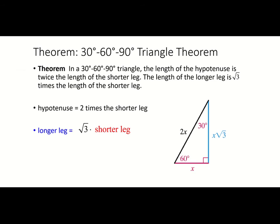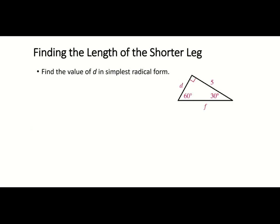Our second special triangle is the 30-60-90 triangle. This one is a little harder because there are three measurements to remember. The side opposite the 30-degree angle is X, the hypotenuse is always 2X, and the side opposite the 60-degree angle is X times the square root of 3.